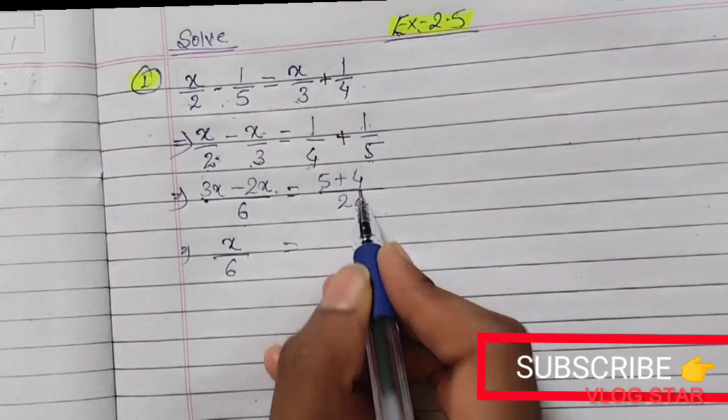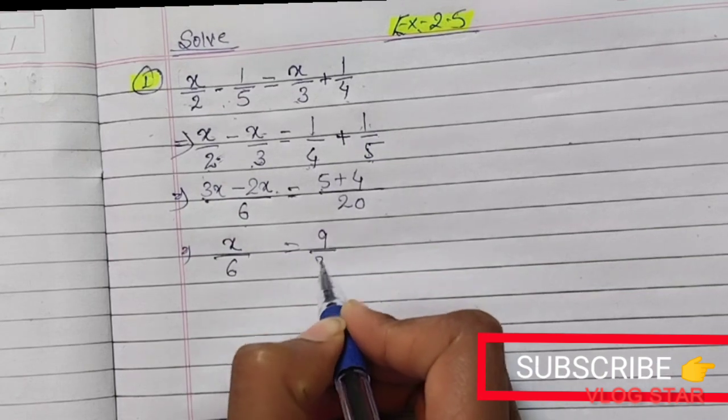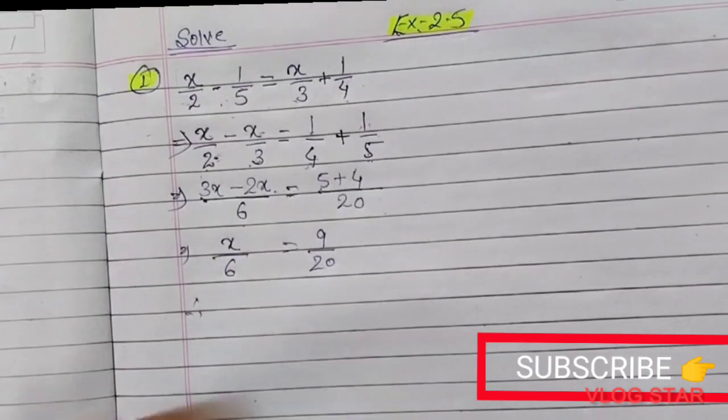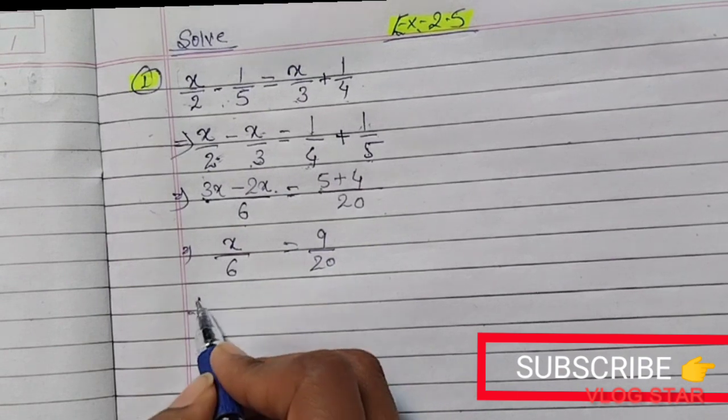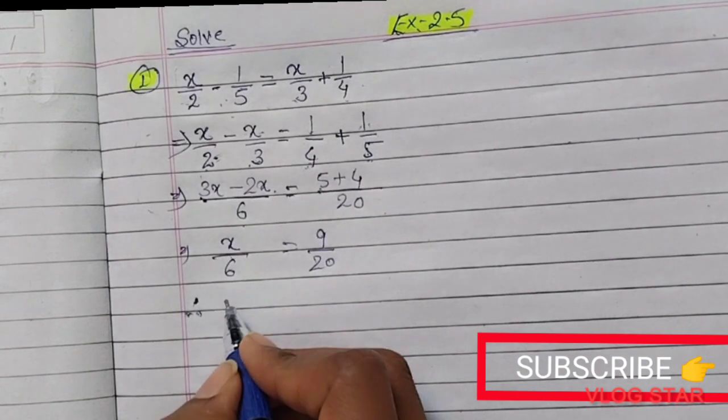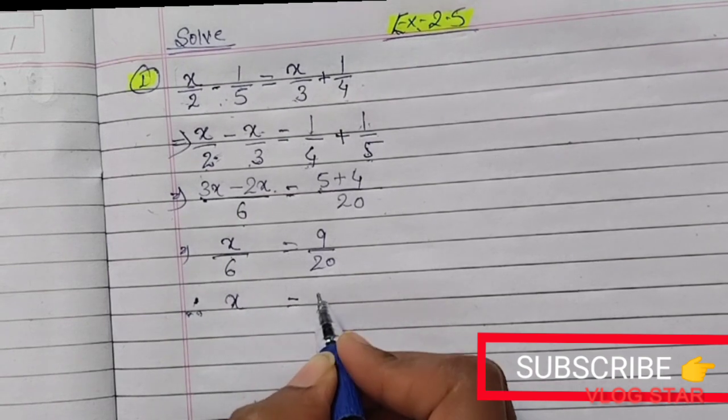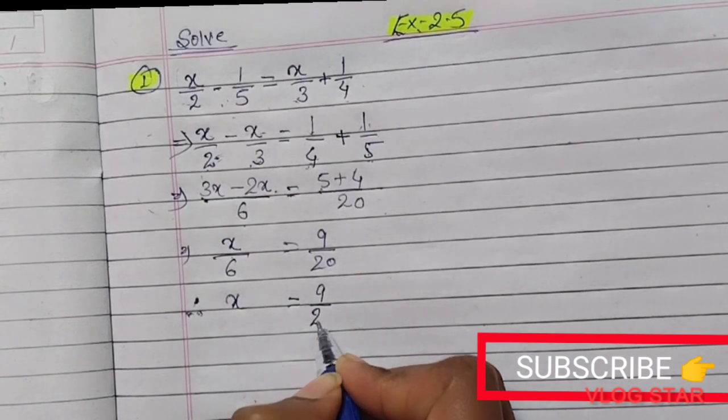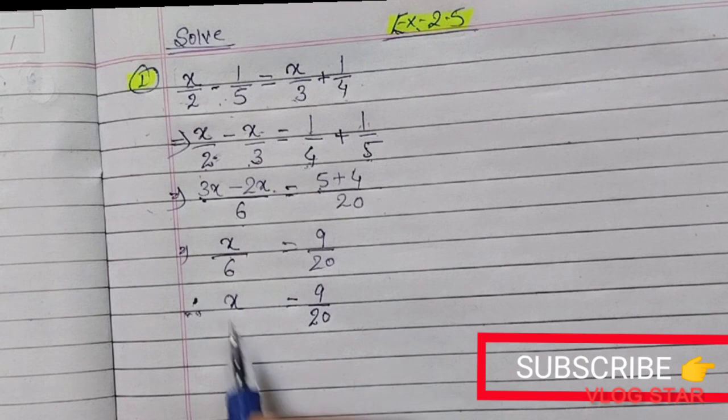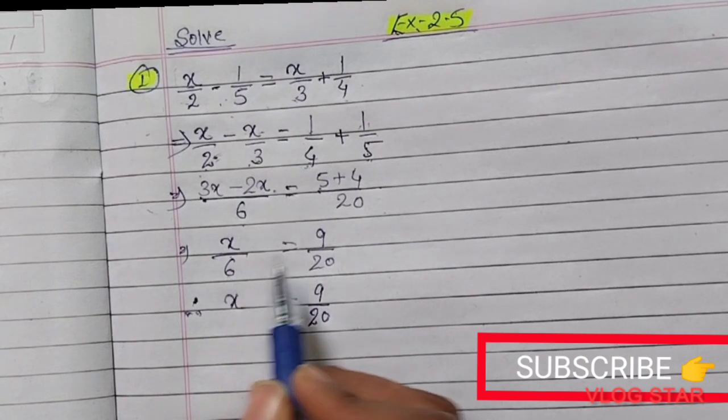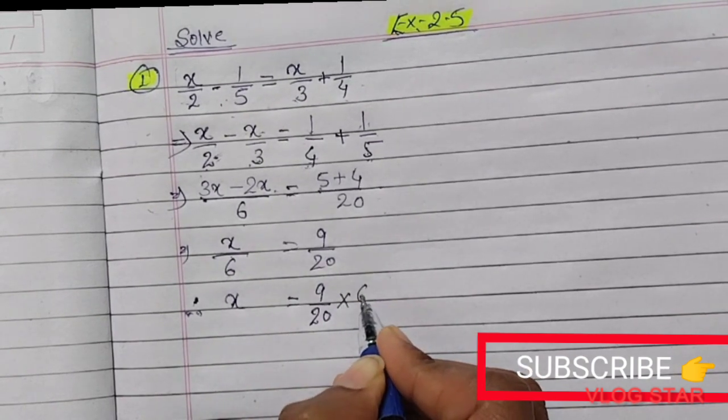To solve this equation, we have to take x to the other side and the other constant to the other side of the equals sign, meaning the right-hand side. If this goes to the other side, it becomes a multiplication with 9/20.